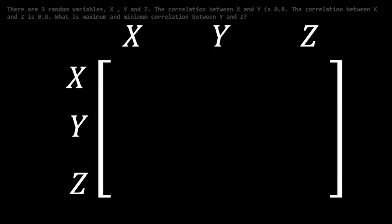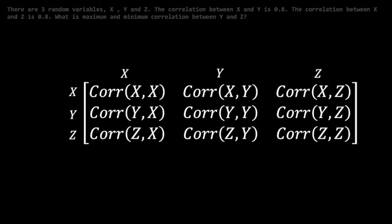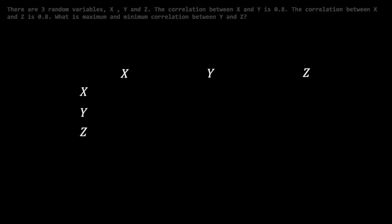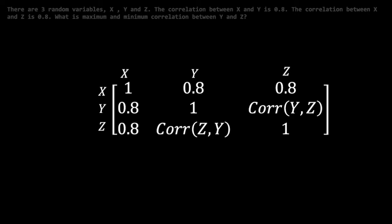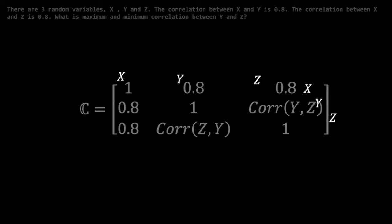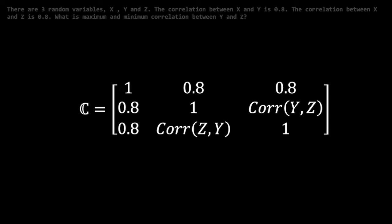We arrange our relations into a 3x3 matrix, with indices 1, 2, and 3 on the rows and columns being associated with the variables x, y, and z respectively. Each row and column index pair represents the pairwise correlations between two variables. From the problem description, most of the matrix can be filled, with the exception of the correlation between y and z. The correlation matrix C is now populated.